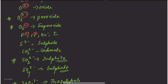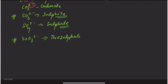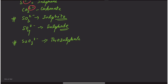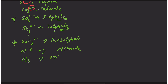Moving to nitrogen-containing anionic ligands: NO₂⁻ is nitrite, N³⁻ is nitride, and CN⁻ is cyanide ion. These are important anionic ligands in coordination chemistry.